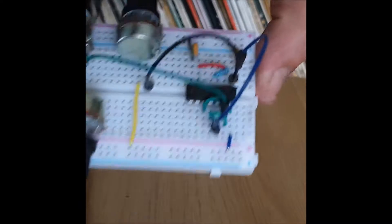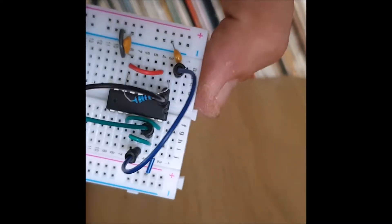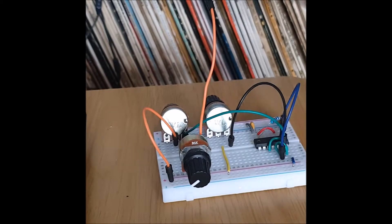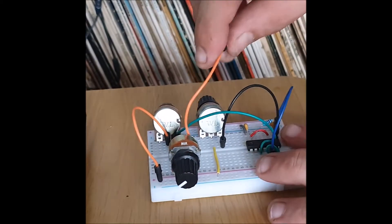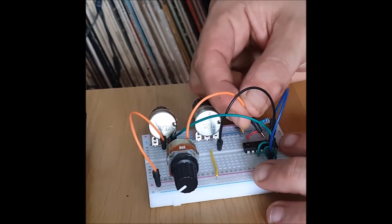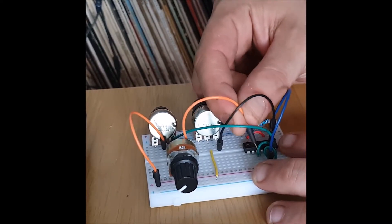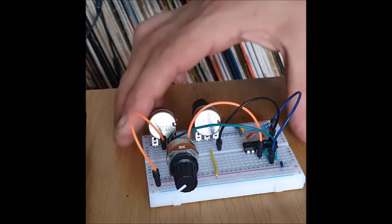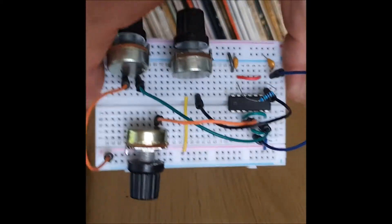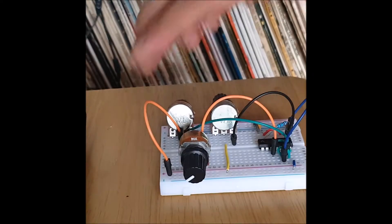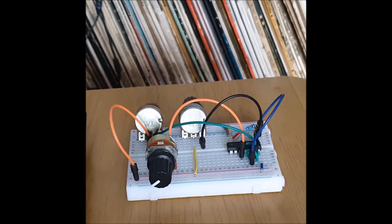Go from the outside leg of the 5K potentiometer to pin 10. Fourteen, thirteen, twelve, eleven, ten. That orange one.